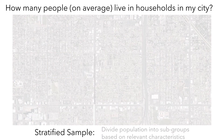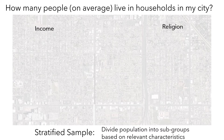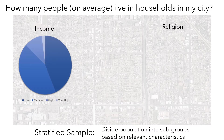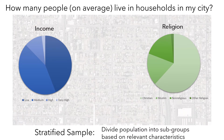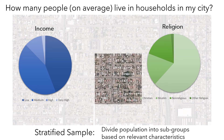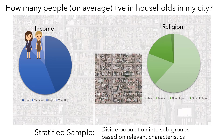Stratified sampling is where you divide the population into subgroups based on relevant characteristics. For example, household size might be linked to income and religion. If you have information about the overall distribution of income and the proportion of adherents to various religions within the city, you can use any other sampling method and, as you survey participants, start excluding people based on these distributions. For instance, if you've already surveyed two high-income households and encounter a third, you might exclude them so that proportions in your sample match those in the population.